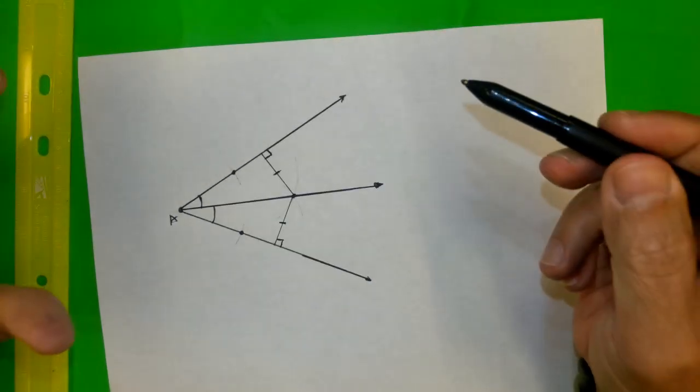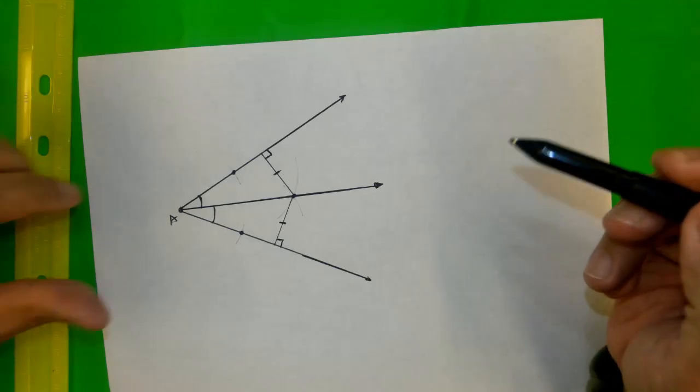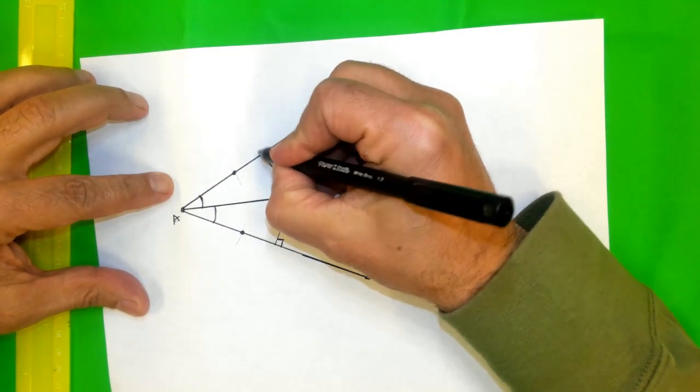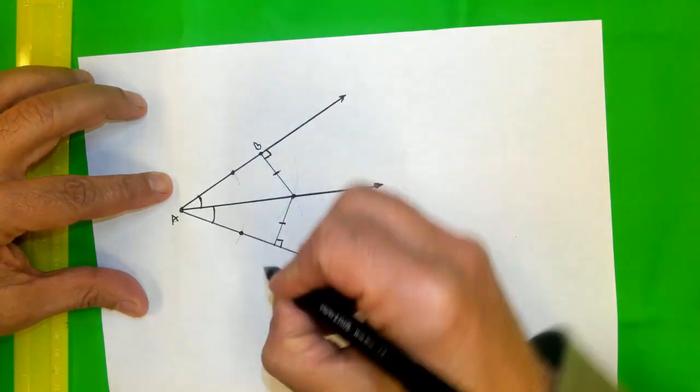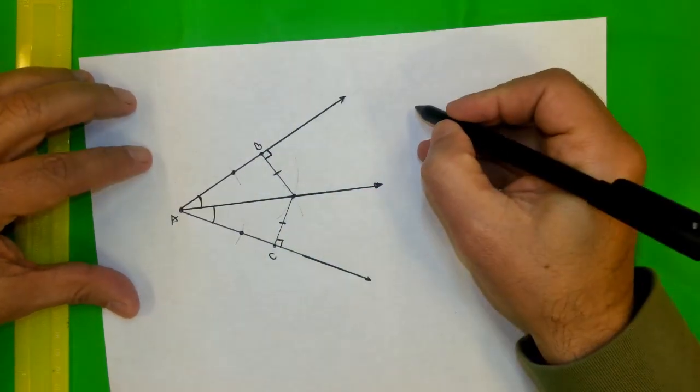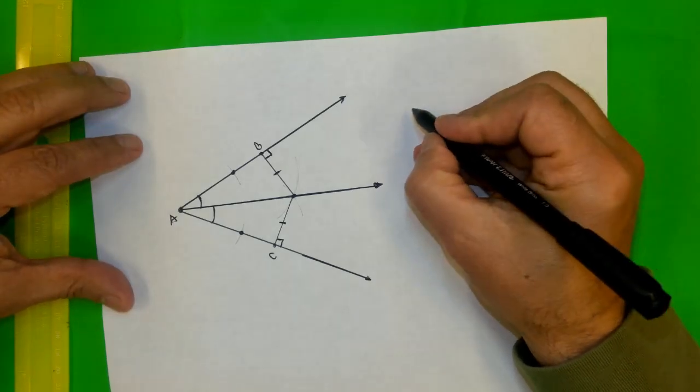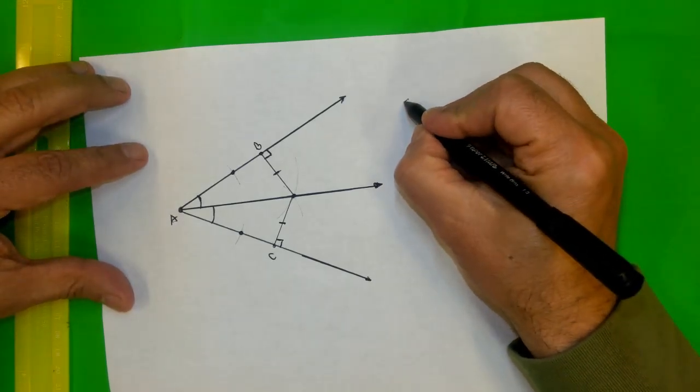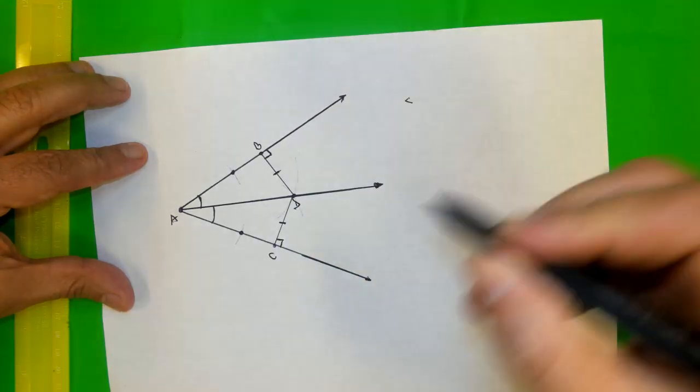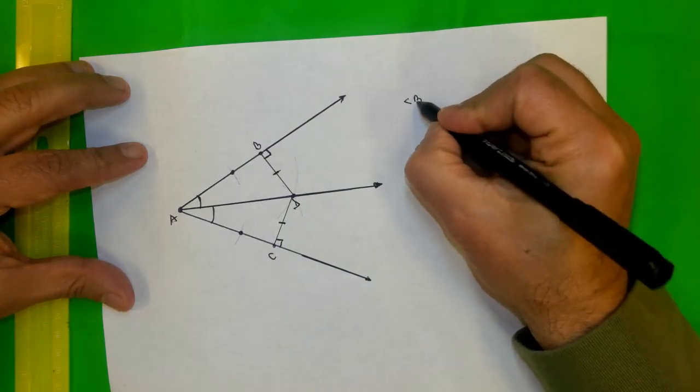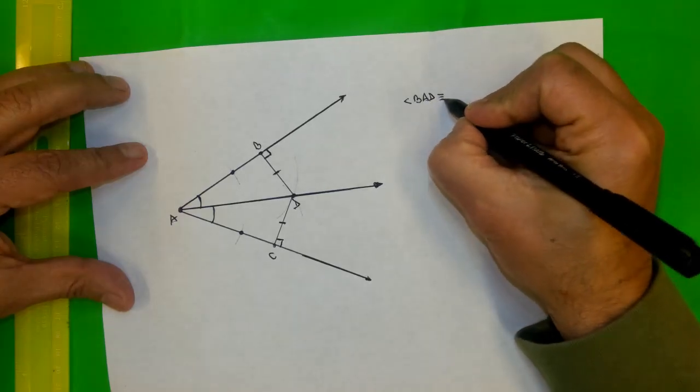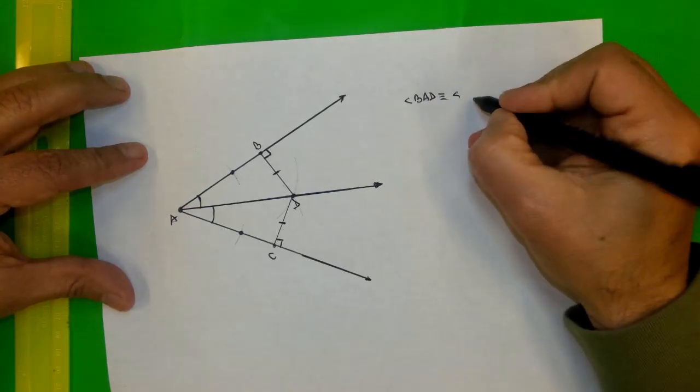That is a property of what comes with the angle bisector. Now, let me write some geometry here. Let's name this point B and this point C. So first of all, let's see what an angle bisector means. It means that angle, let's call this one point D, right? Angle BAD congruent with angle CAD.